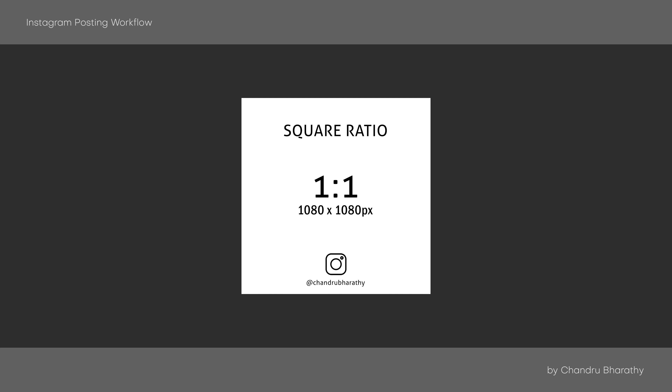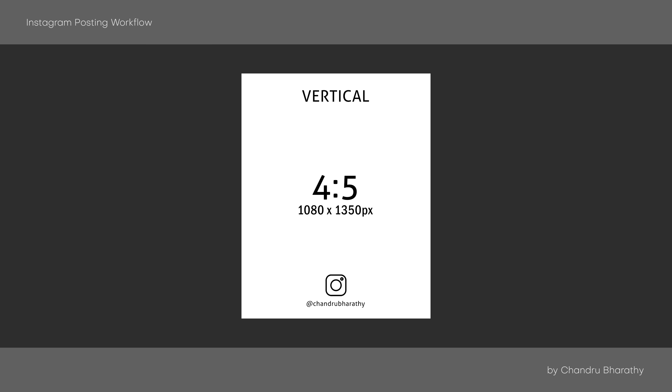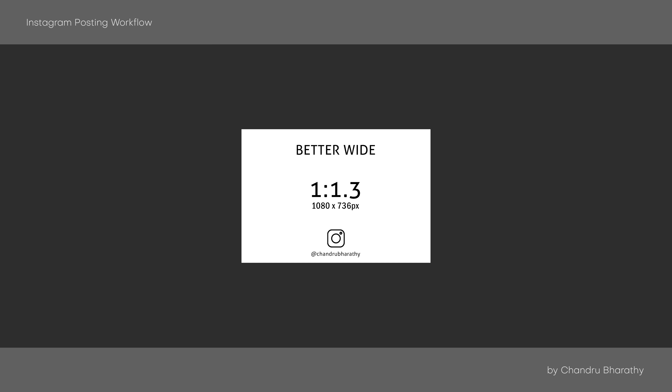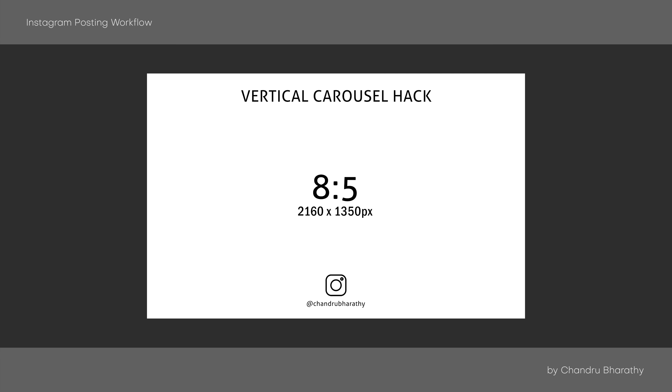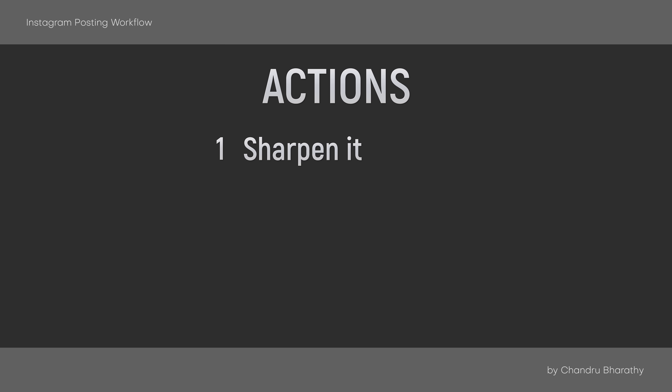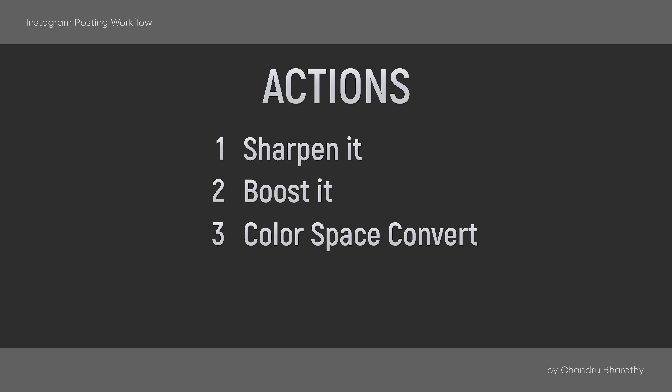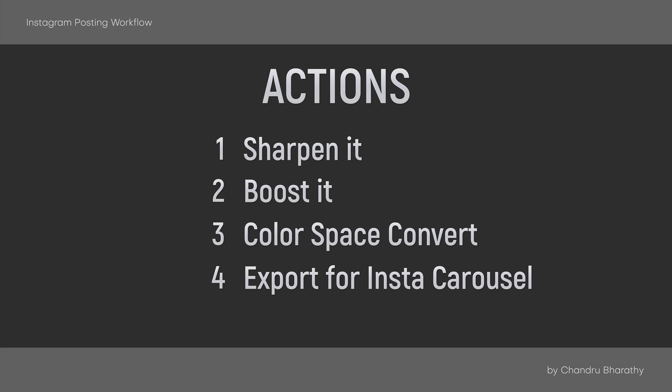For the sharpness and workflow solution, you can use 5 types of Instagram posting templates — check the download link in the description. Templates include: Square Ratio, Vertical, Better Wide, and two Carousel Hack Templates. The 4 actions are: Sharpen It, Boost It, Color Space Convert, and Export for Carousel.